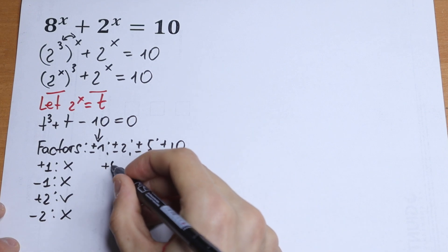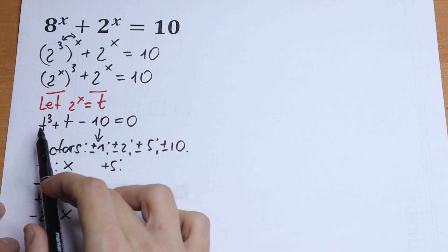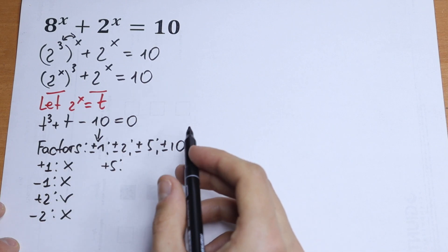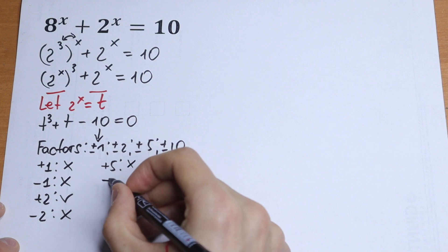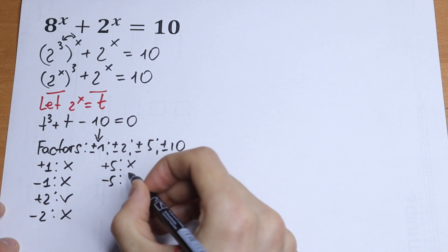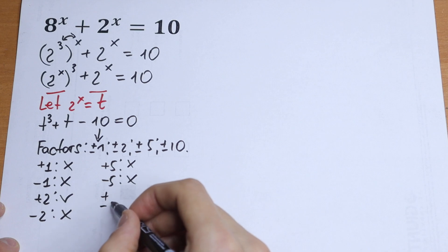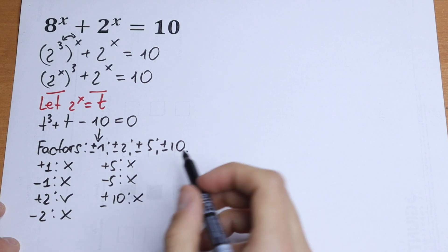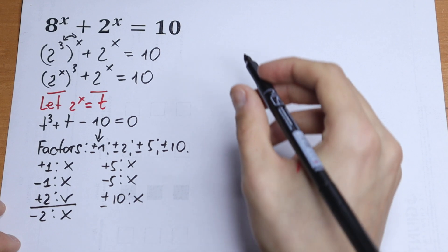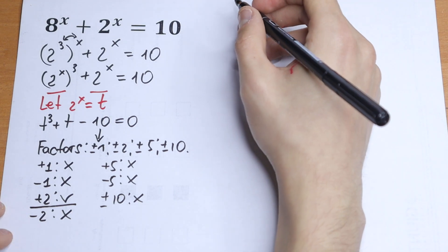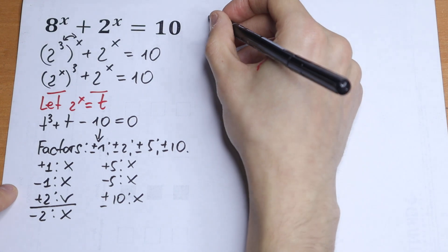Plus 5: 5 cubed is 125, so this is not equal to 0. Minus 5 as well, and the same situation with plus or minus 10 — none of these equal 0. So we can see that we can factor out t minus 2 from this expression.